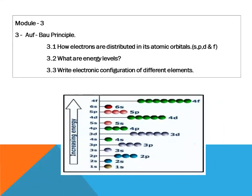Module 3: Aufbau Principle. To understand Aufbau principle, we must know about how electrons are distributed in its atomic orbit and subatomic orbit (s, p, d, f), what are energy levels, and how we can write electronic configuration of different elements.